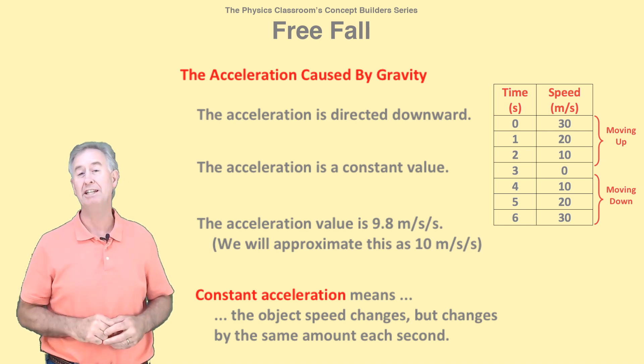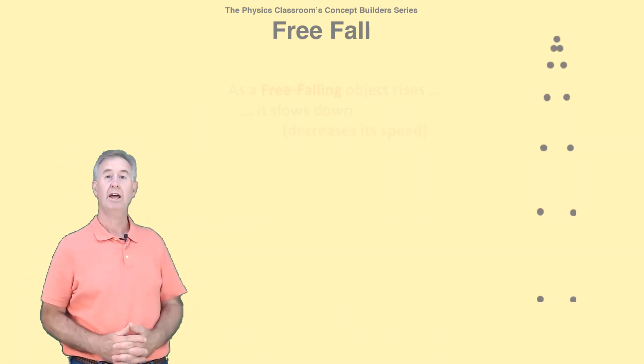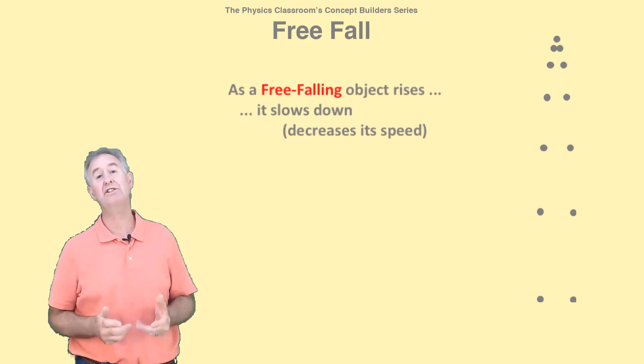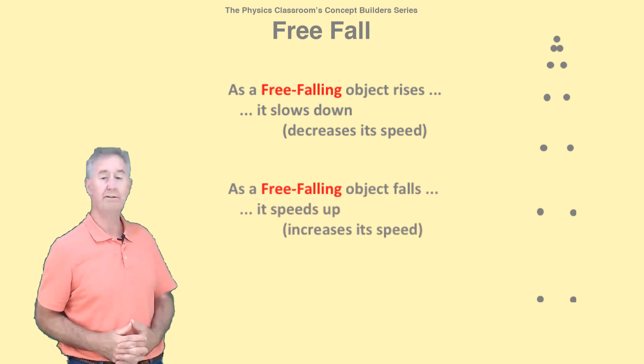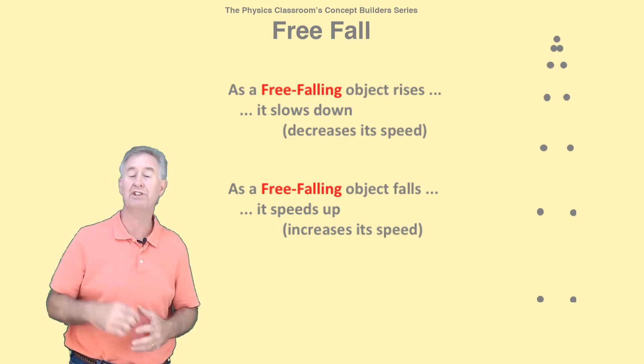As depicted by the dot diagram, as an object rises, it gets slower, its speed decreases. This is consistent with a downwards acceleration. And as the object falls, it gets faster, its speed increases, again, a downward acceleration.